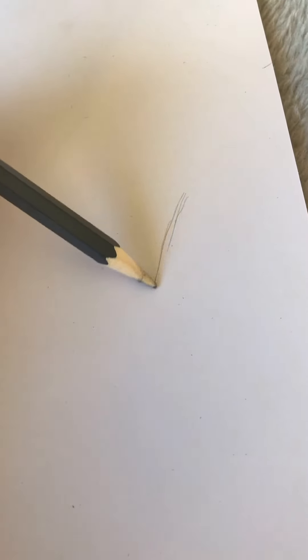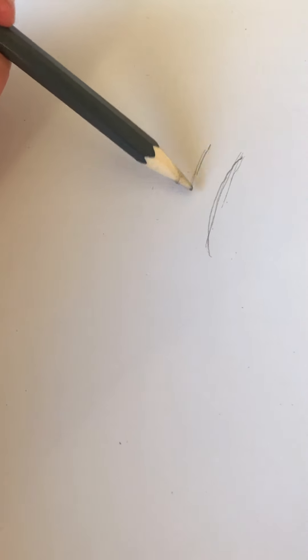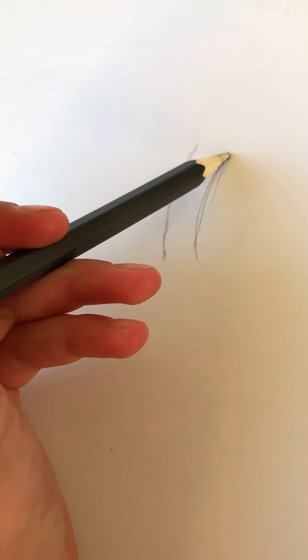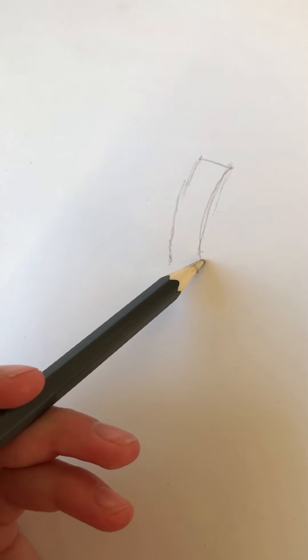Okay, so first what you want to do is draw a line kind of like this, kind of curvy. Like that. Next to that, you want to draw a second one. Just like that. Drawing those together at the top and bottom. Should look like this.